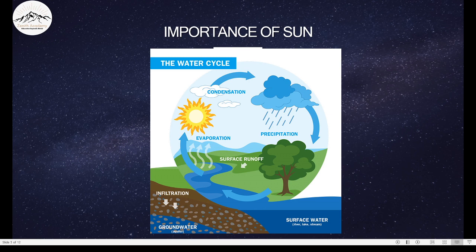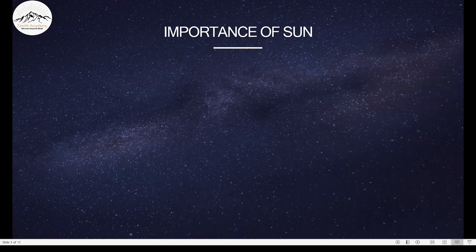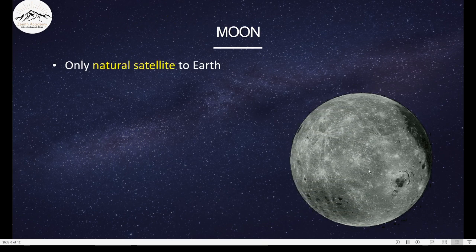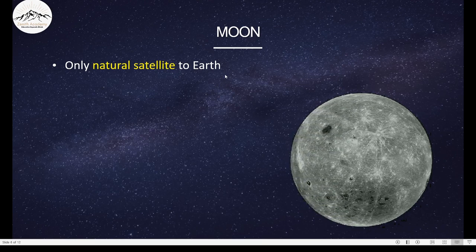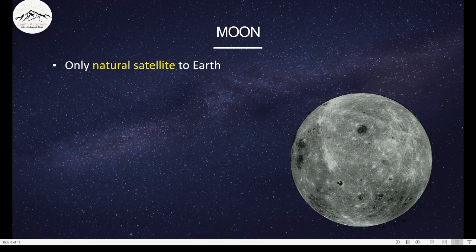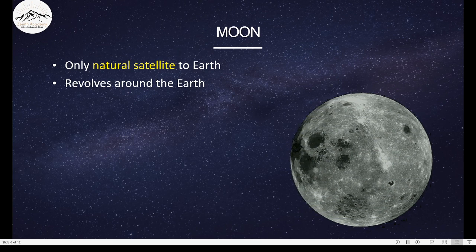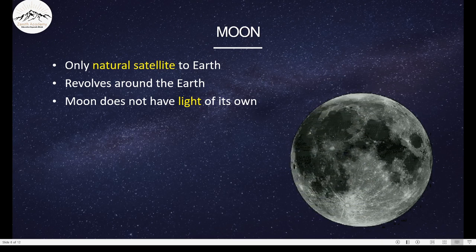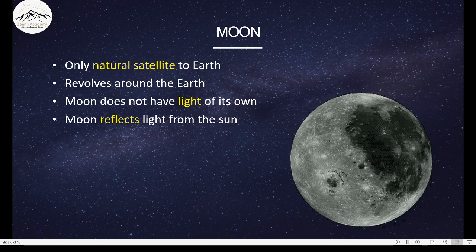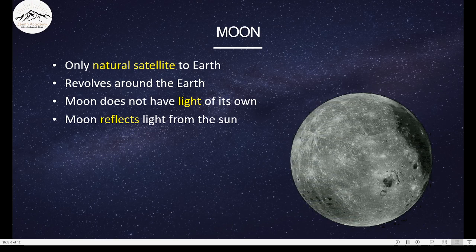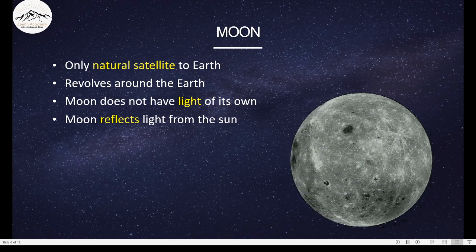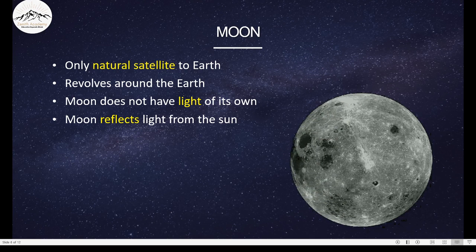Now that we know about the star, let's learn about our own natural satellite, our Moon. This is our Moon. It's beautiful, right? It is the only natural satellite to Earth. It revolves around the Earth and rotates about its axis. Moon does not have light of its own. So what it does is it reflects light from the Sun. So when we look at the Moon, and we think it's giving us light at night, it's not actually giving us light. It is just reflecting the light that it's getting from the Sun.